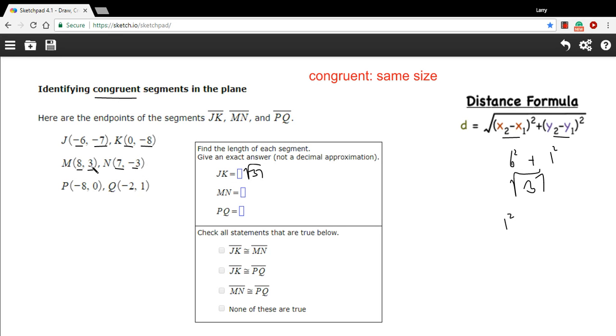And what you see is we're gonna get exactly the same thing - we're gonna get the square root of 37 for this one. What that means is that these segments JK and MN are indeed congruent.